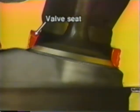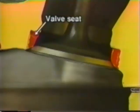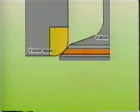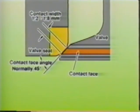When the valve is closed, the valve seat is in close contact with the valve face to secure the air tightness of the combustion chamber. The valve seat is conical with a contact face angle normally of 45 degrees. The contact width is 1.2 to 1.8 millimeters.